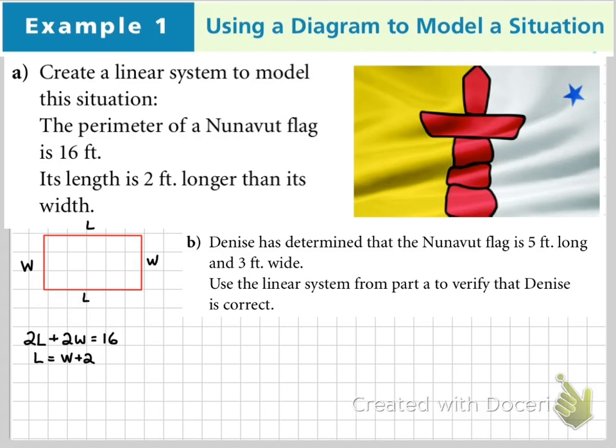Then, it says Denise determined that the Nunavut flag is 5 feet long and 3 feet wide. Use the linear system from part A to verify that Denise is correct.